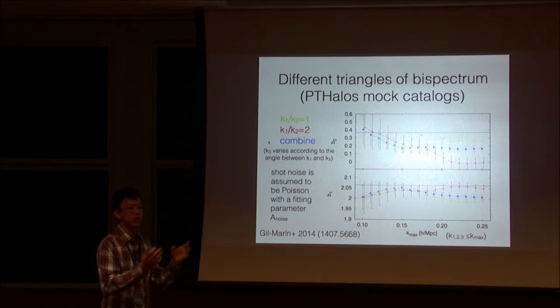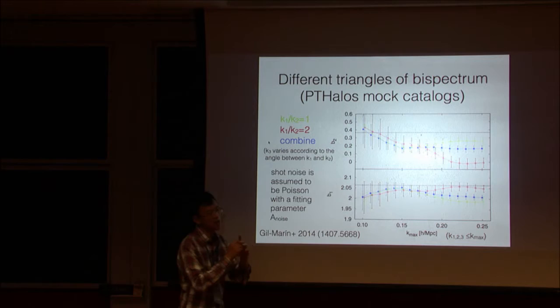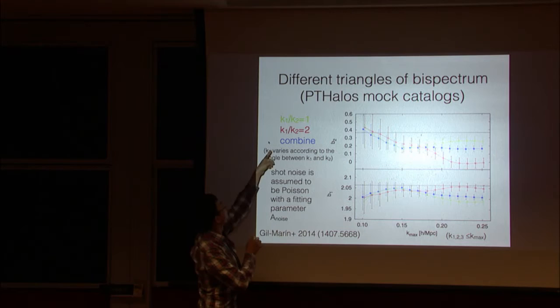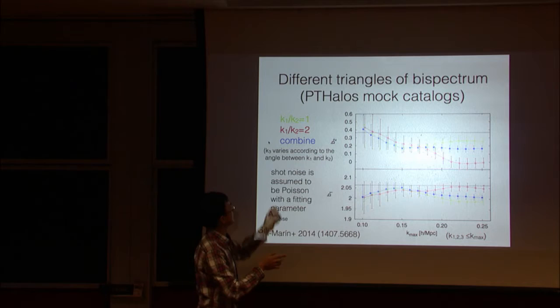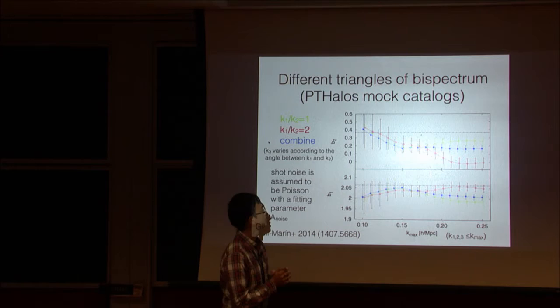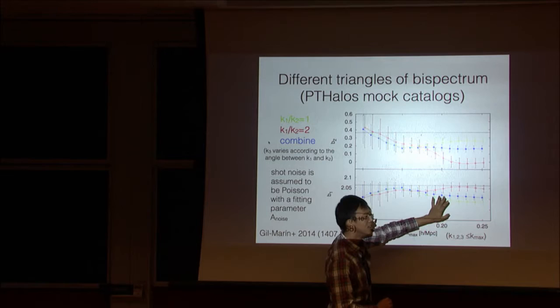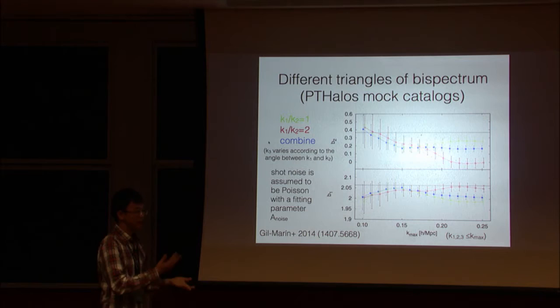The second test we can do to the for the bispectrum model is just to fit different triangle shapes. Let's see if we get consistent B1 or B2. And this result is from the Gilmarin's paper. So first they fit the bispectrum of two triangle types. The first one is the green line is K1 equals to K2. And let K3 varies according to the angle. And the red line is K1 equals to 2.8 K2. And again, let K3 varies. And blue line is just a combined green and red line. You can see that as a, so they set a Kmax. So making sure that all K1, K2, K3 are smaller than this Kmax. You can see that the agreement for both B1 and B2 is good for all three lines on larger scale. But once you're going, pushing to smaller scale, then you starting to see some difference.